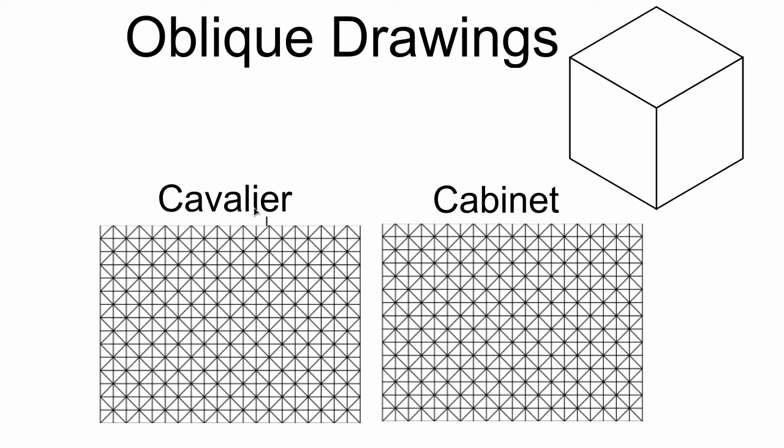So we're going to start off with the cavalier one, and then we're going to go to the cabinet. The only difference between these two is the depth of the objects. We'll get into more of that in just a second. But to begin with the cavalier drawing, we want to start with the front view. In this case, we have our white cube here, a one inch white cube. If each of our grid spaces is a quarter of an inch, then we need to go down four grid spaces. Let's start off in our bottom left hand corner.